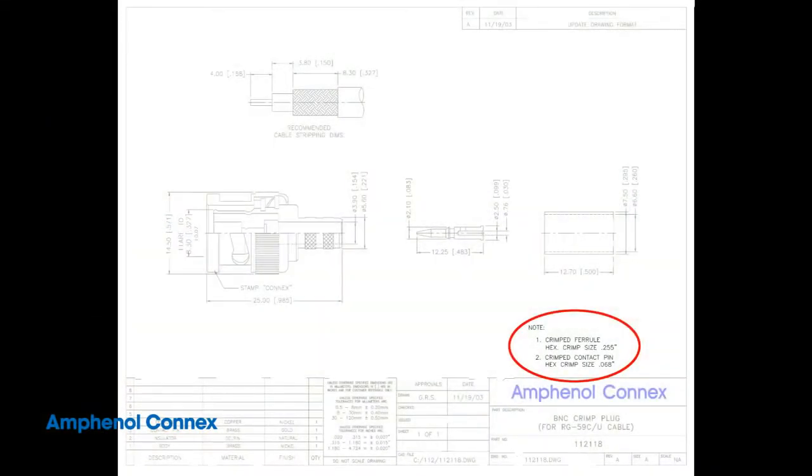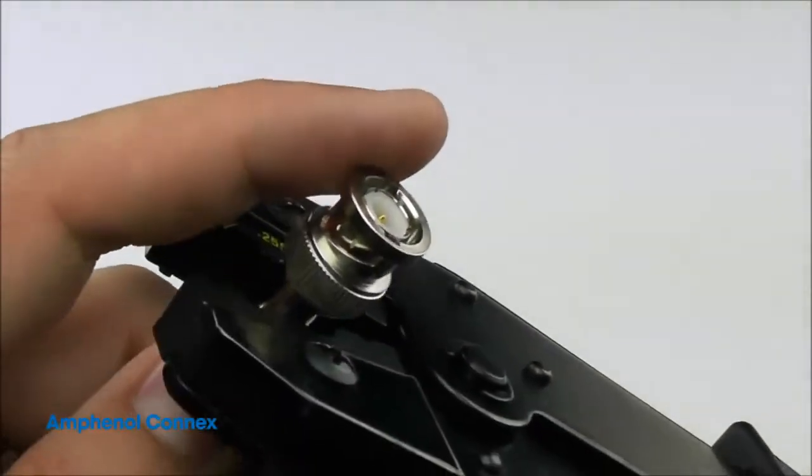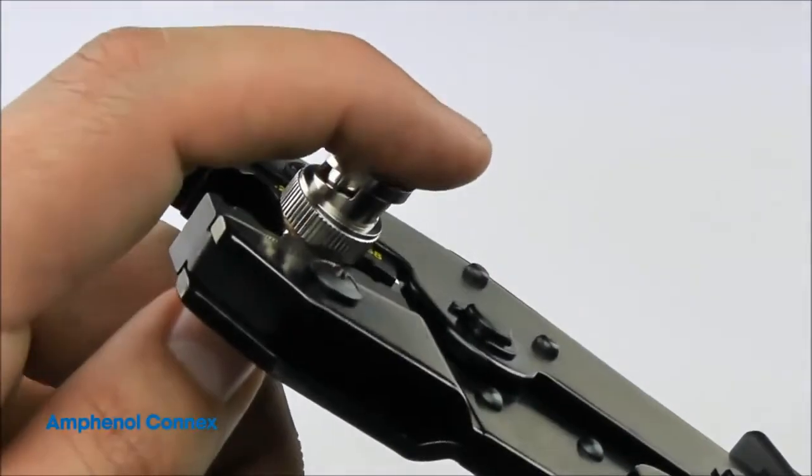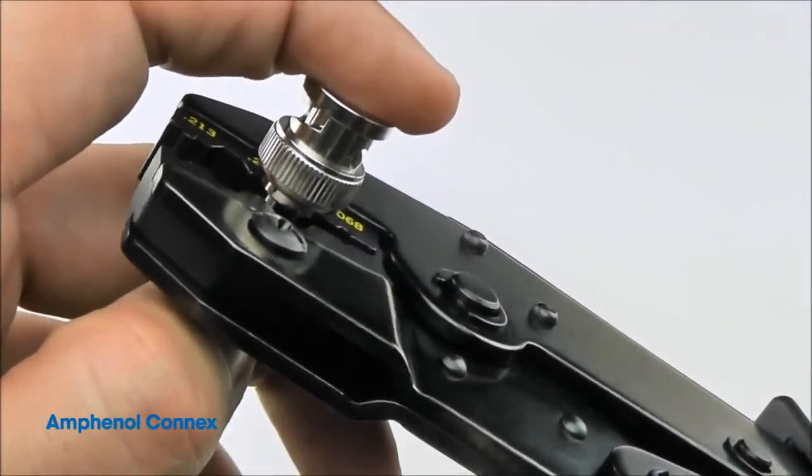Next you will revisit the crimp dimensions on the drawing and note that the ferrule crimp dimension is 0.255 inches. Now, place the ferrule into the 0.255 inch cavity on the jaws of the tool, making sure that the base of the connector body is flush against the tool.